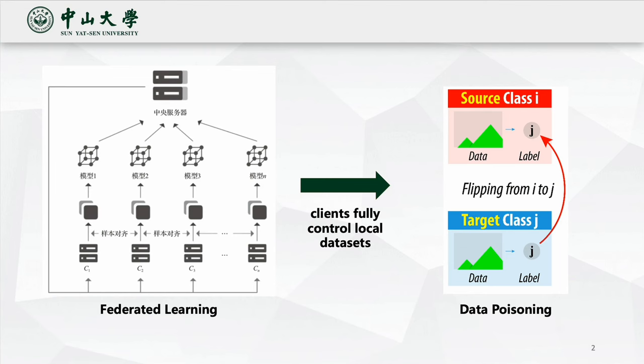Federated learning is a novel learning paradigm that enables distributed clients to cooperatively train global models using local datasets. However, the server's inability to directly observe local datasets opened the door for potential malicious clients to execute data poisoning attacks, such as label-flipping attack, to upload poisonous information and disrupt the global training process.